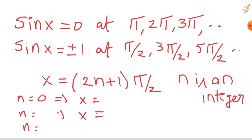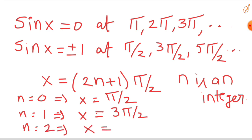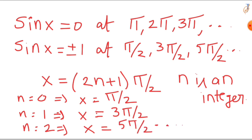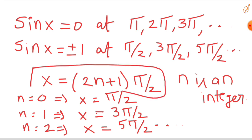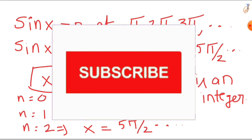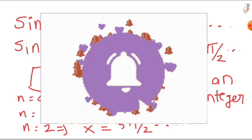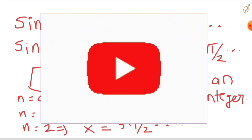If you substitute n equals 0, you get x equals pi by 2. If n equals 1, you get x equals 3pi by 2. If n equals 2, you get x equals 5pi by 2, and so on. Hence the solution is x equals (2n plus 1) times pi by 2. This is our required solution. If you enjoyed this math explanation and want to see more exciting content, be sure to subscribe to our channel. Thank you for watching.